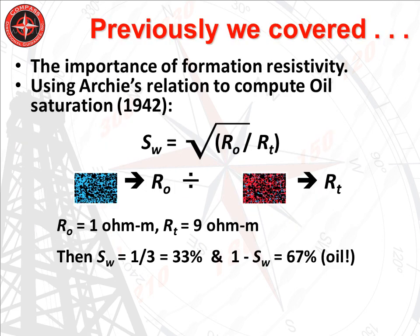In Part 1, we covered the importance of formation resistivity and how to use Archie's relation to determine oil saturation. Archie's relation is used to estimate the water saturation, SW, of a zone of interest. Two quantities are required. The first is R0, an estimated resistivity representing the hypothetical resistivity of the zone of interest if it were 100% saturated with water. R0 in the oil-bearing zone cannot be measured directly since it is mixed with oil. Therefore, it must be estimated from the resistivity of a nearby water zone with similar geology and water salinity to the zone being evaluated.